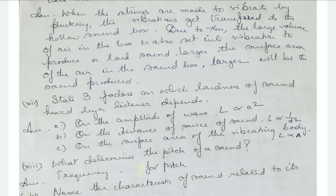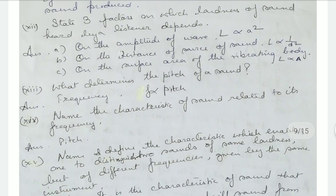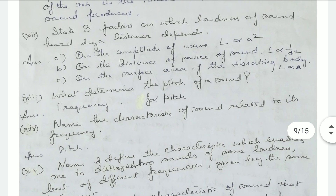State three factors on which the loudness of sound heard by a listener depends. First, it depends on the amplitude of the wave — loudness is directly proportional to the square of the amplitude. Second, on the distance of the source — loudness is inversely proportional to the square of the distance. Third, on the surface area of the vibrating body — loudness is directly proportional to the surface area.